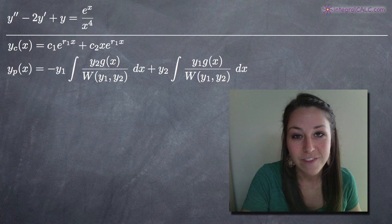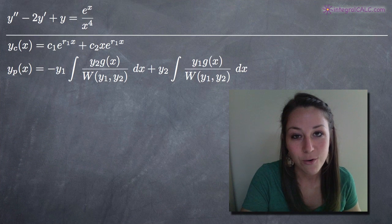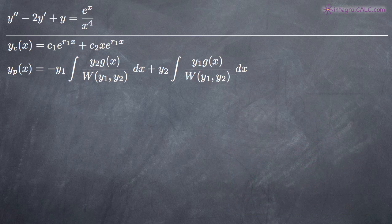Today we're going to be talking about how to use the method of variation of parameters to solve a second order differential equation. In this particular problem, we've been given the second order non-homogeneous differential equation: y double prime minus 2 times y prime plus y equals e to the x divided by x to the fourth. Variation of parameters is a method for finding the particular solution of a differential equation — it usually comes right after the method of undetermined coefficients.